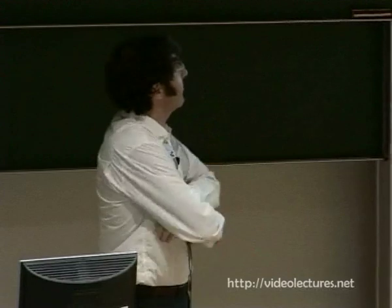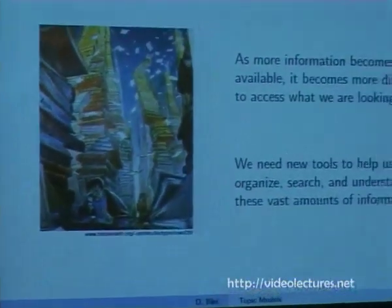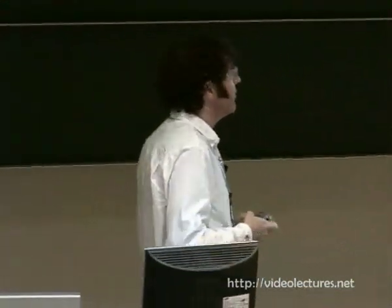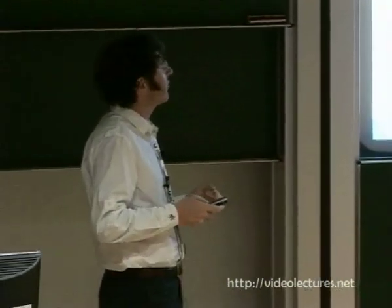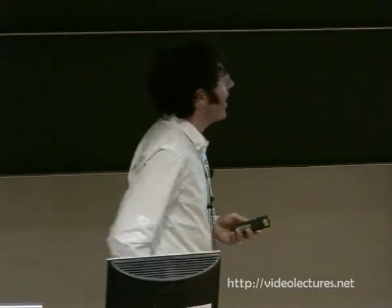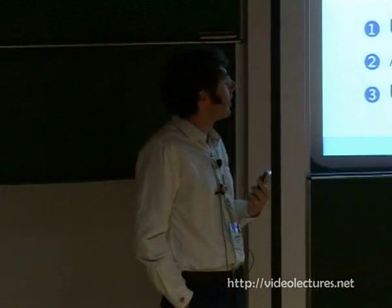What topic modeling is about is that, as you all know, it's almost redundant — more information becomes available to us, it becomes more difficult for us to quickly access it, search for things in it, and basically get something out of it. So we need new algorithmic tools to help us organize, search, and understand these vast amounts of information — things like text archives and image archives and all different kinds of data. What topic modeling provides are methods for automatically organizing, understanding, searching, summarizing, and exploiting these large electronic archives.